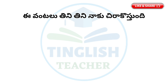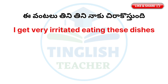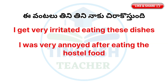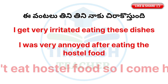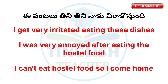Sentence number four: Eating these dishes makes me very irritable. For example: I was very annoyed after eating the hostel food. Or: I was very irritated after eating the hostel food. Another example: I can't eat hostel food, so I come home.